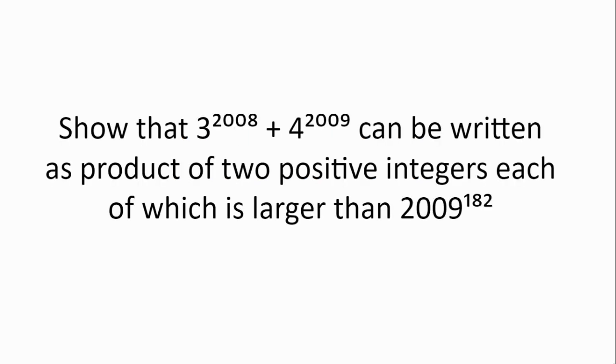Show that 3 to the power of 2008 plus 4 to the power of 2009 can be written as the product of two positive integers, each of which is larger than 2009 to the power of 182.